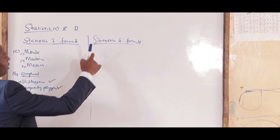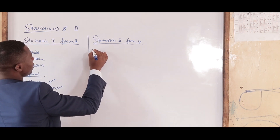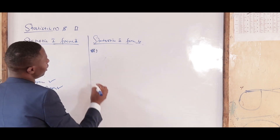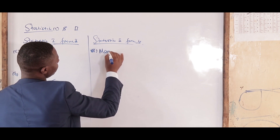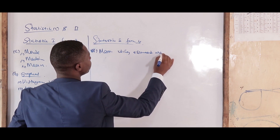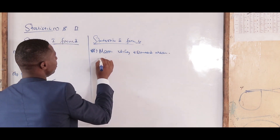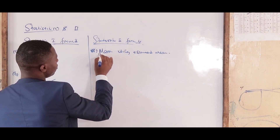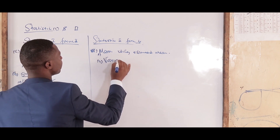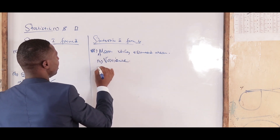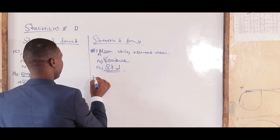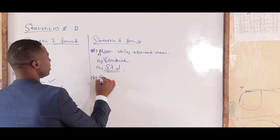In Statistics 2, Part A, you have to: first, determine the mean using the assumed mean; second, look for variance; and third, look for standard deviation.